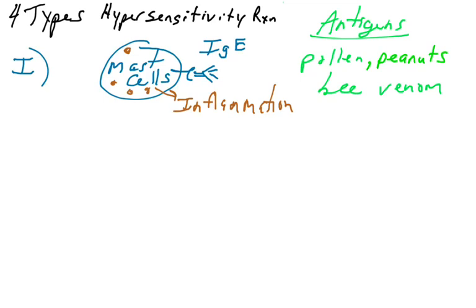So type 1 reactions involve IgE recognizing an allergen. Type 2 reactions involve the antibody isotype IgG recognizing an allergen that is affixed to the surface of a human cell. So IgG is binding something that is not self, it's coming from the environment, but it's not a pathogen.